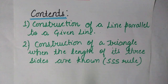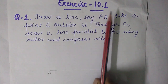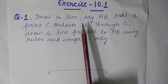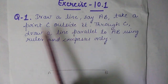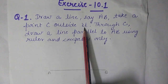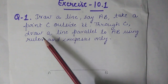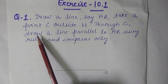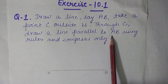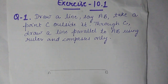So first we will take exercise 10.1 question number one. The question says: draw a line AB, take a point C outside it — the point should not lie on that line — and through C draw a line parallel to AB using ruler and compass only.